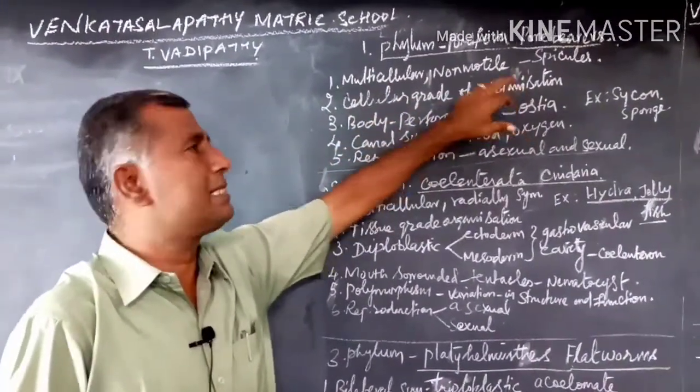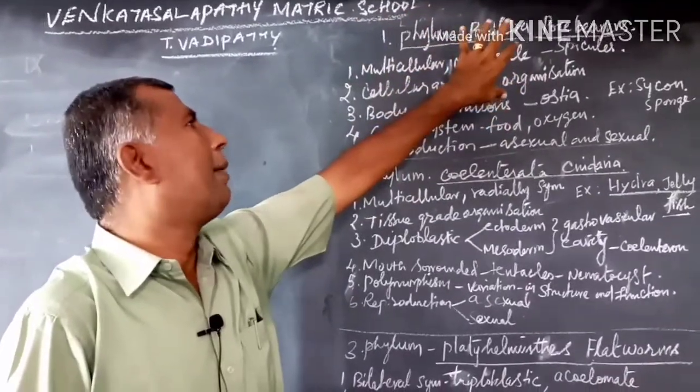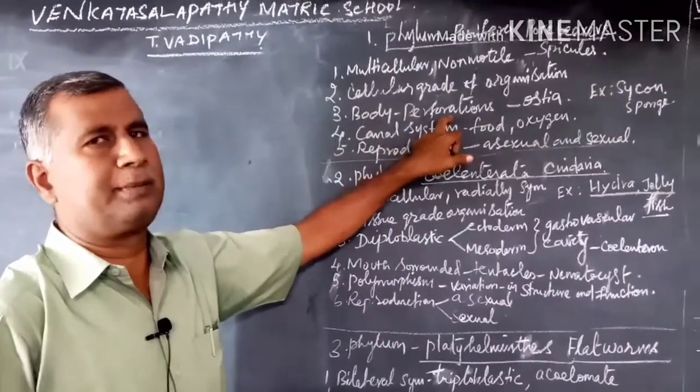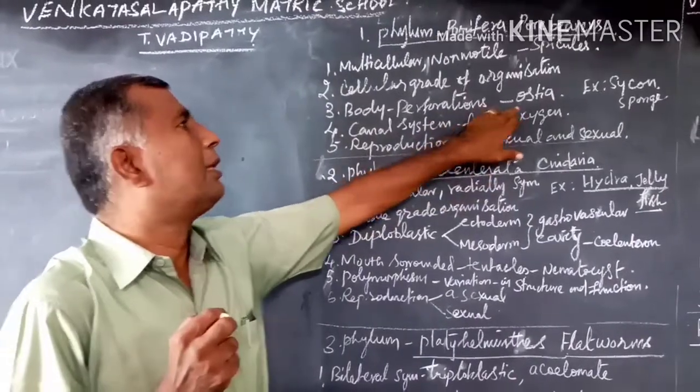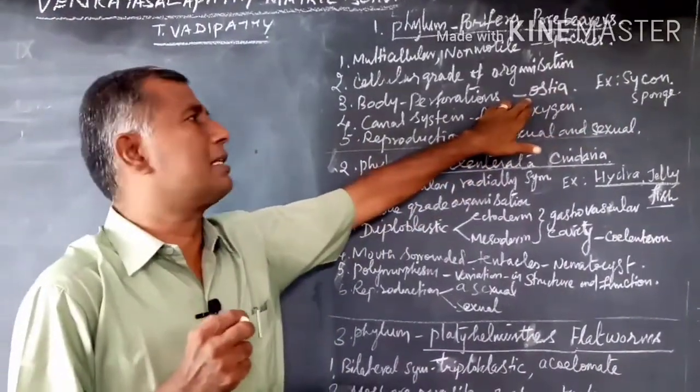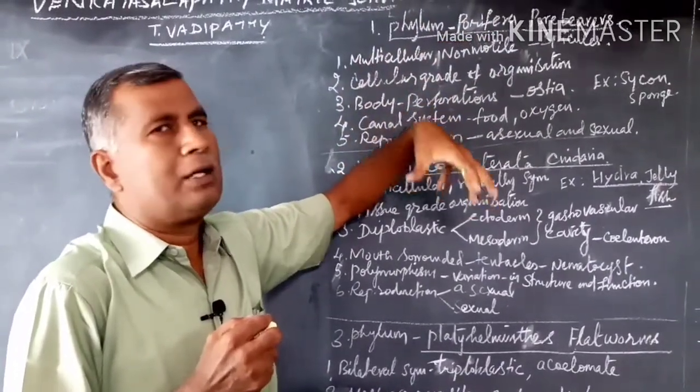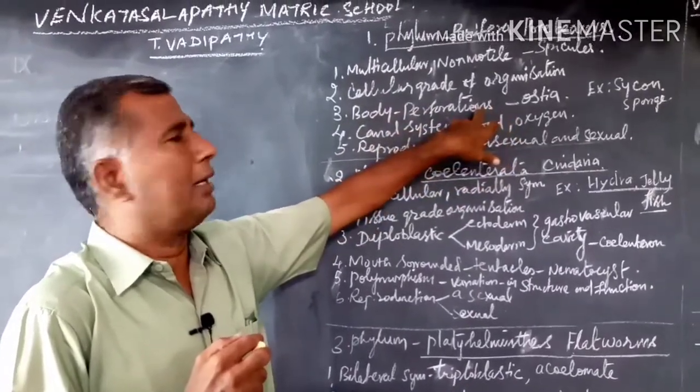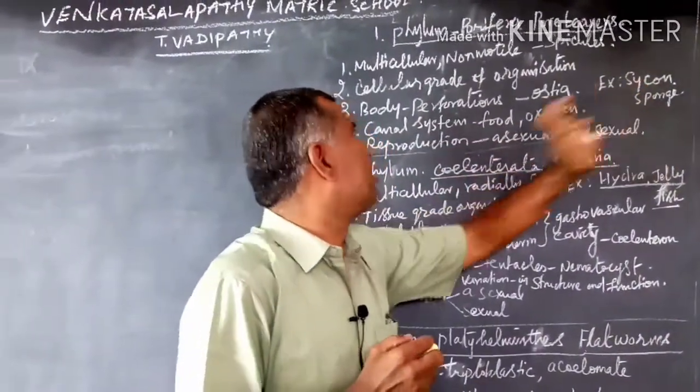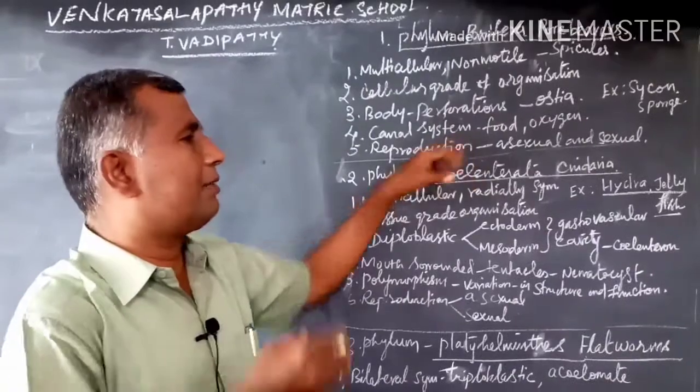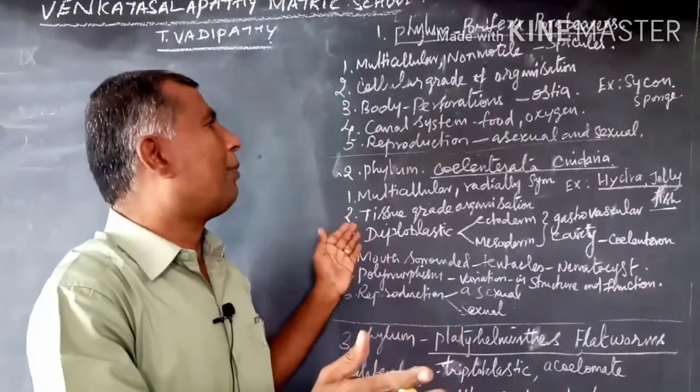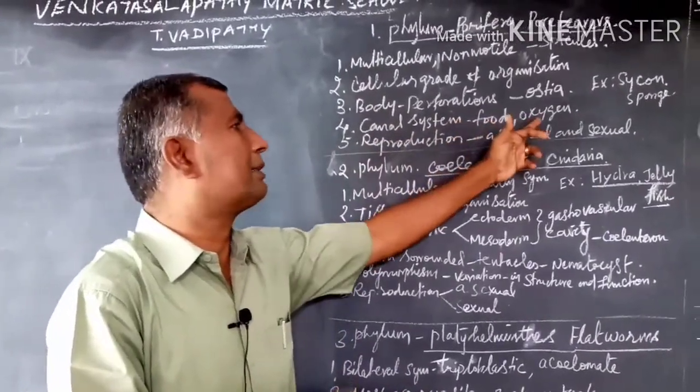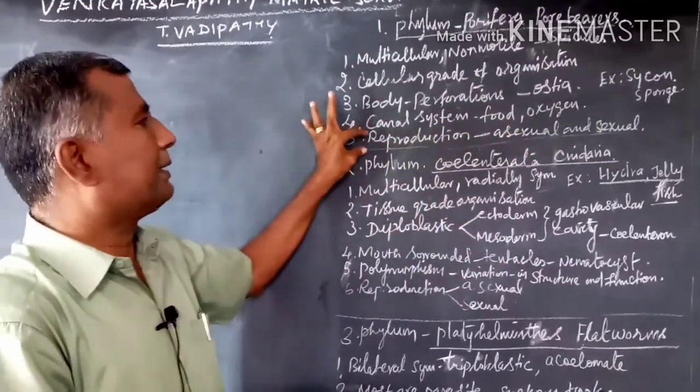Cellular grade of organization means the body is made up of a number of cells. The body has numerous perforations – perforations means holes. The mouth is called ostia, through which water enters the body, and through which food molecules and oxygen can be captured. Example: Sycon, sponge. They have a water canal system. Water enters through the ostia and comes out through pores. They absorb food and oxygen from water. Reproduction may be asexual and sexual.